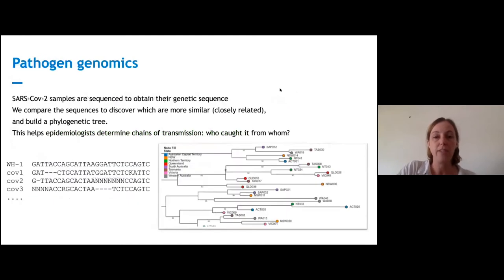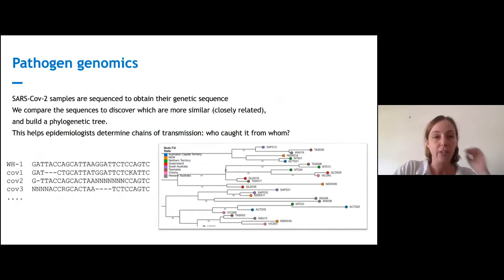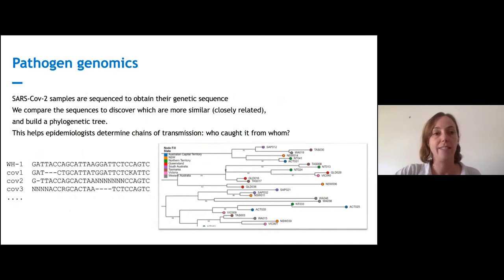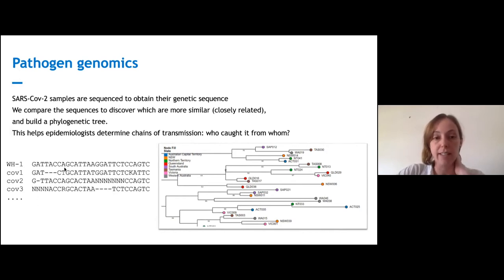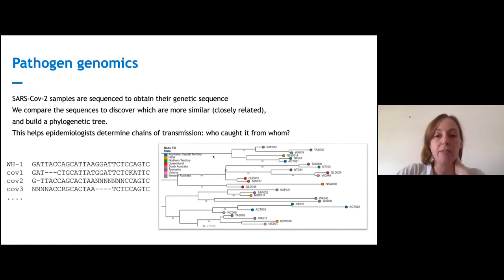A little bit about pathogen genomics. The SARS-CoV-2 sample — not the patient's DNA, but the viral DNA — is sequenced to get the genetic sequence, which is a string of nucleotide letters. The sequences are compared to discover which are more similar, meaning more closely related, and we build a phylogenetic tree using the sequence data. Note: this is not real data — this is a phylogenetic tree built out of fake data. We've got labels on the nodes with samples from different states, and this sort of tree lets epidemiologists work out which cases are probably related to one another.